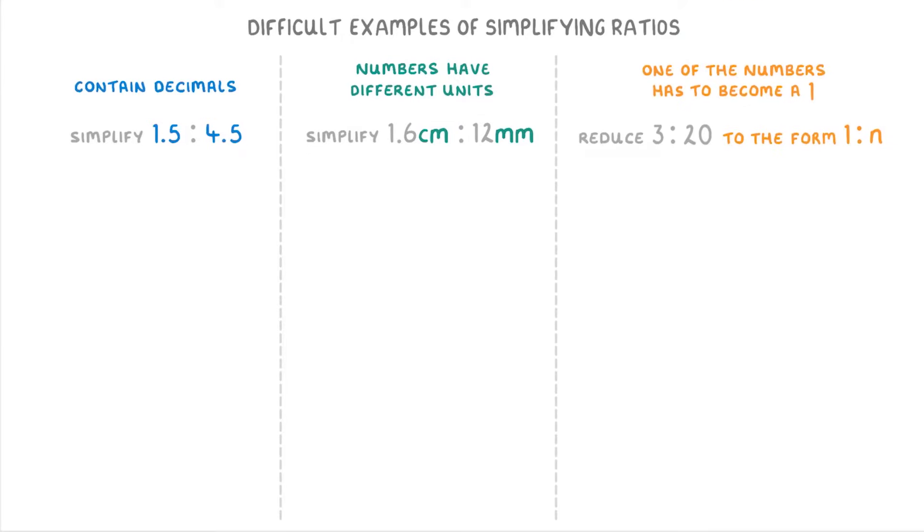In today's video, we're going to look at some of the more difficult examples of simplifying ratios, including those that contain decimals, those whose numbers have different units, and those where one of the numbers has to become a 1.